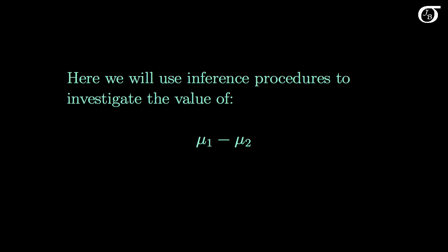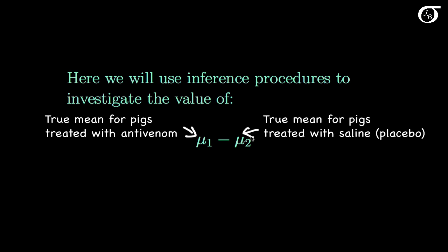Here we will use inference procedures to investigate the value of μ1 minus μ2. Here μ1 represents the true mean of the antivenom group, and μ2 represents the true mean of the saline, the placebo or control group. And in experiments like this, people sometimes call this difference the treatment effect, and they might label it with a symbol like δ.